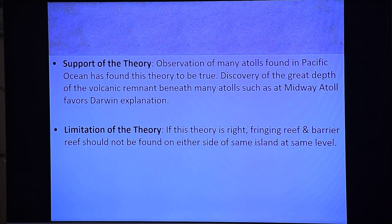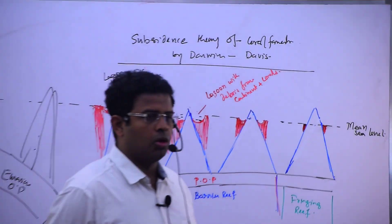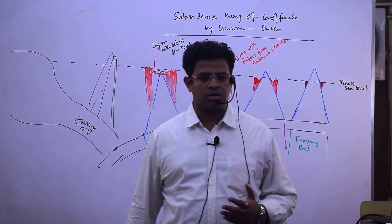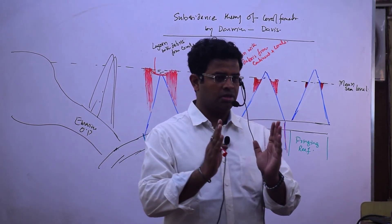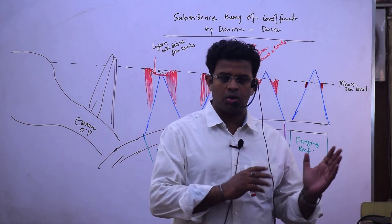To see some support of this theory, Darwin's and Davis concept, it has been found that in the Pacific Ocean these stages of development have been seen. An island is having an atoll, and especially over the hot spots an island is subsiding. There is water, there is a fringing reef, then there is a barrier reef, and then atoll.